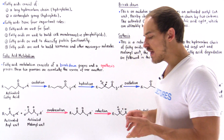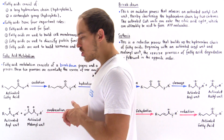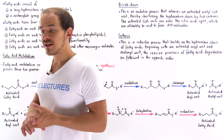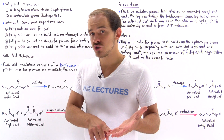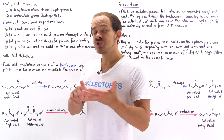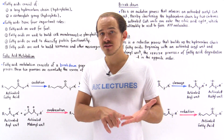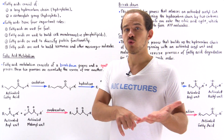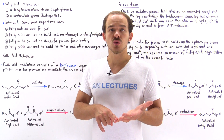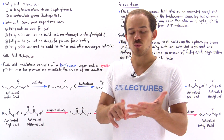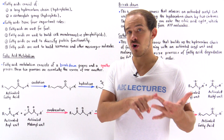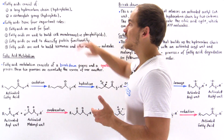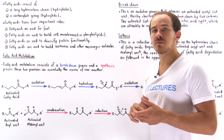So what are fatty acids? Fatty acids are biological molecules that consist of a long hydrocarbon chain and a terminal carboxylate group. The terminal carboxylate group gives the molecule hydrophilic polar properties, while the long hydrocarbon chain gives the fatty acids hydrophobic, non-polar properties.